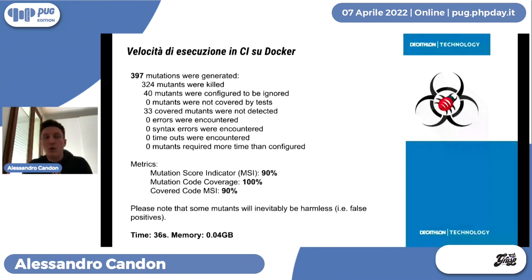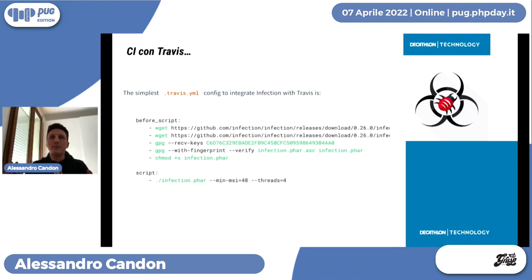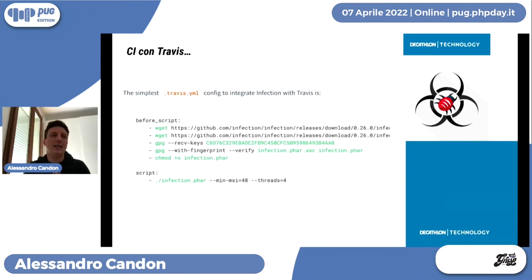Se volete implementare i test di mutazione nel vostro sistema di continuous integration, Infection suggerisce una configurazione con Travis, ma funziona allo stesso modo con GitHub Actions: scaricate il pacchetto e lo eseguite indicando un minimo Mutation Score Indicator, ad esempio 48%.